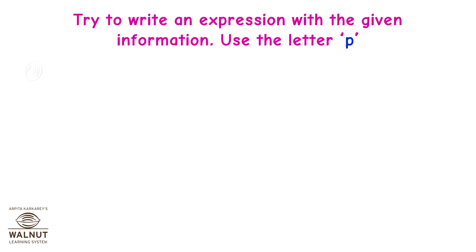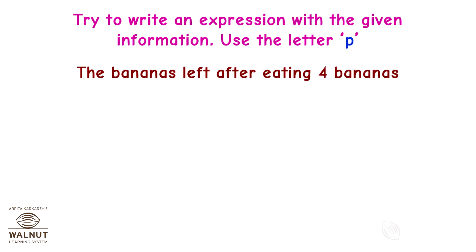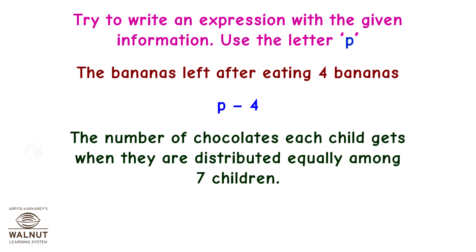Try to write an expression with the given information. Use the letter P. The bananas left after eating 4 bananas will be P minus 4. The number of chocolates each child gets when they are distributed equally among 7 children will be P upon 7.